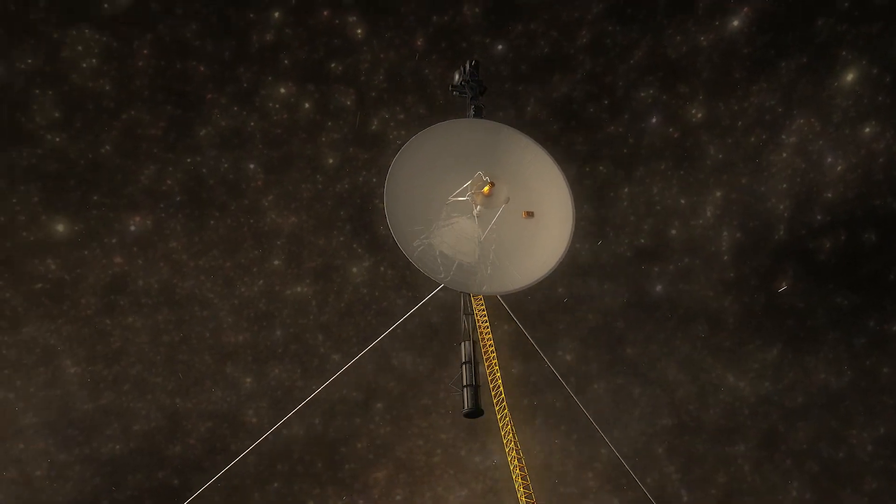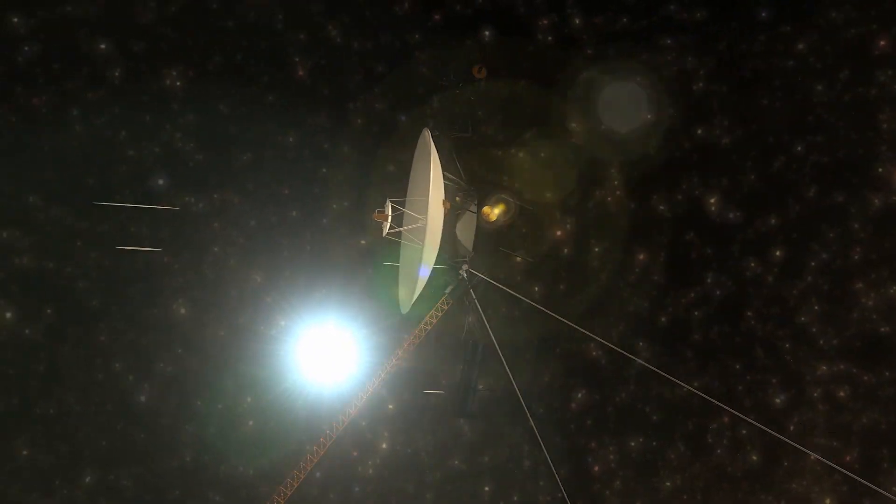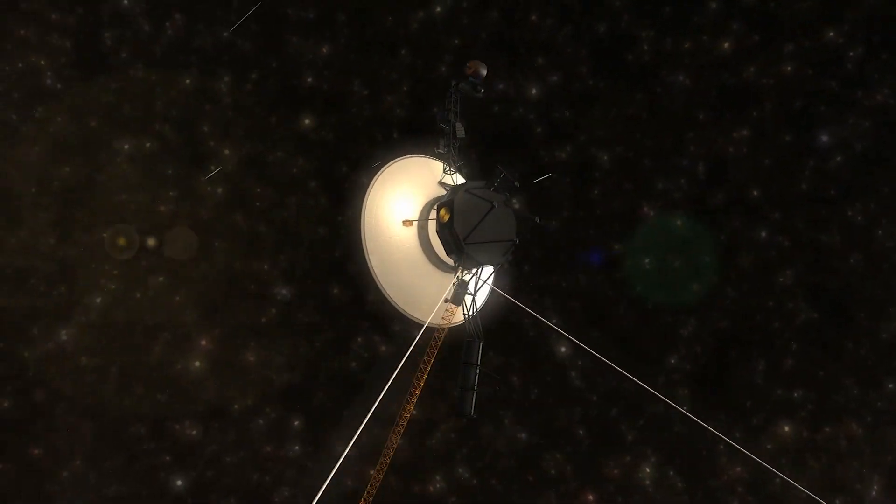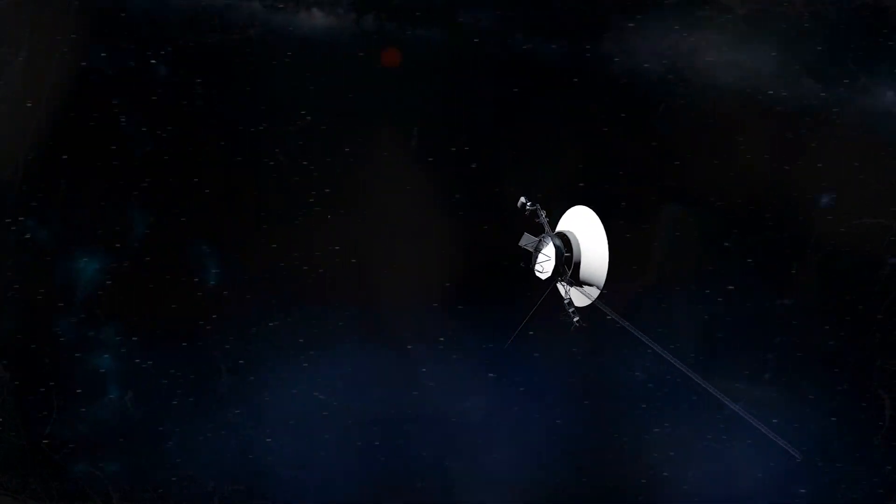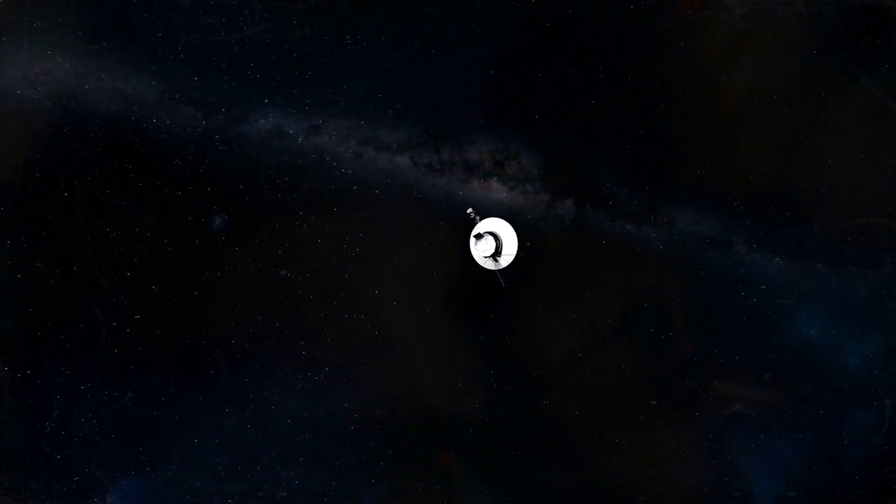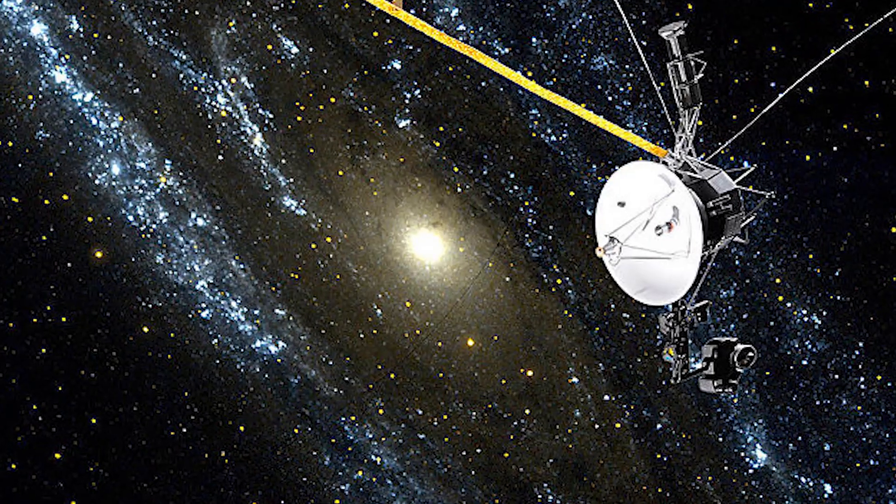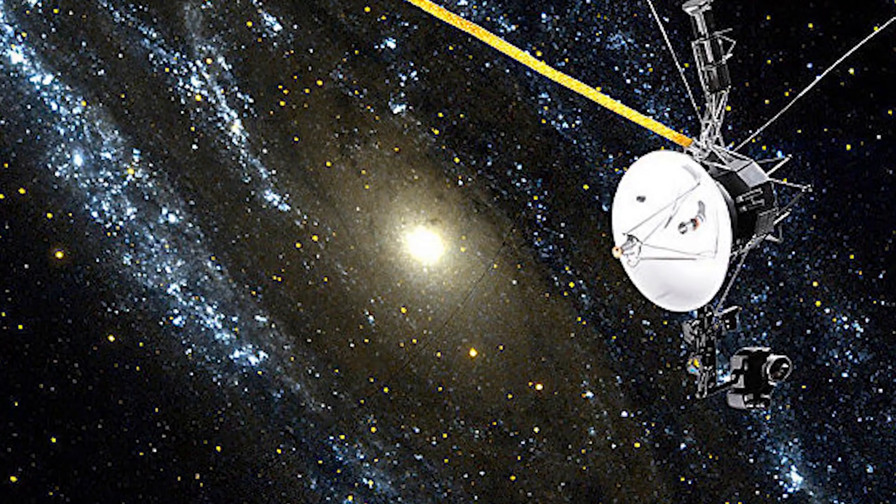Voyager 2 also showed us more about the heliosphere's shape, which is symmetric and bullet-like. At least, so it appears from the two locations where both Voyager probes exited it. Once is chance, twice is a coincidence, and we haven't quite gotten to three times as a pattern yet, so it's still mostly theory at this point.